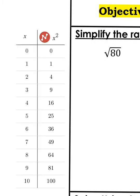Here's a list from 0 to 10 of perfect squares, and of course it just goes on forever, but knowing at least the first 10 is very helpful.